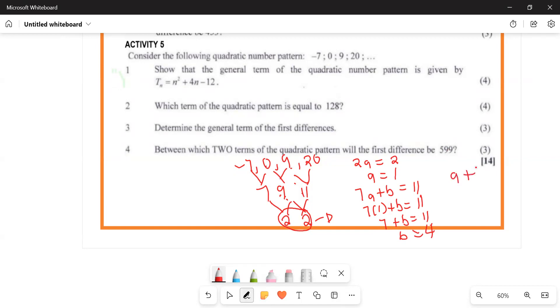To find c, we use a + b + c equals the first term, which is -7. Substituting a = 1 and b = 4: 1 + 4 + c = -7. So 5 + c = -7, therefore c = -7 - 5 = -12. We conclude therefore Tn = n² + 4n - 12. Wait, that should be 2n² based on a = 1... let me recalculate. Actually a = 1 means the coefficient is 2(1) = 2. So Tn = 2n² + 4n - 12.